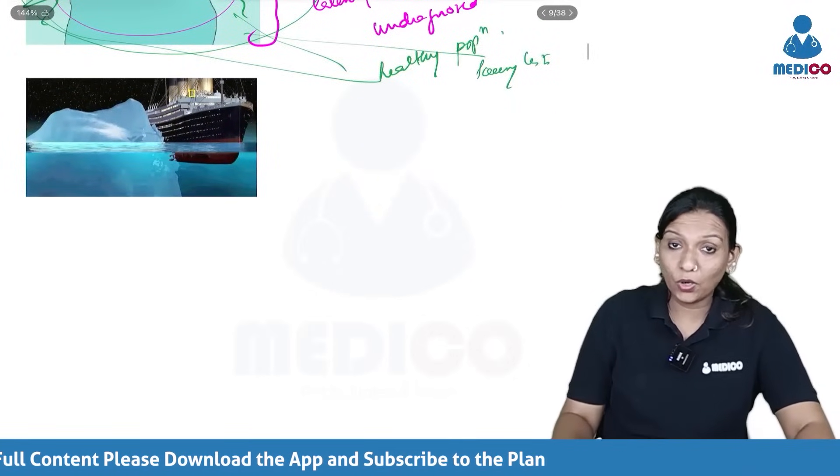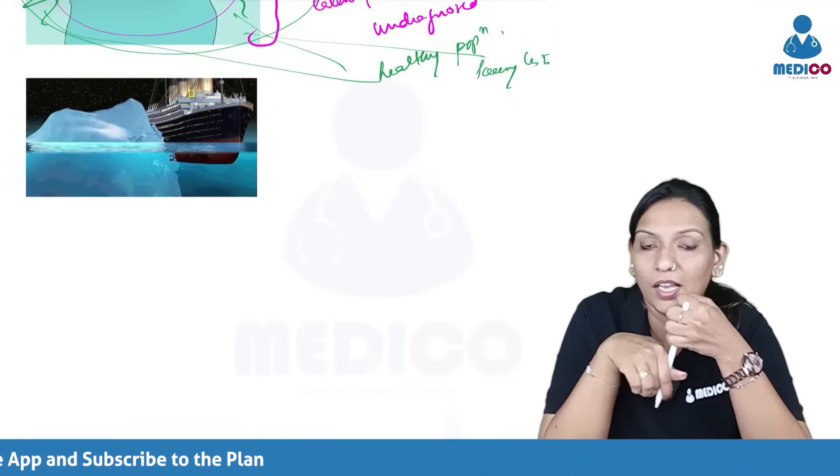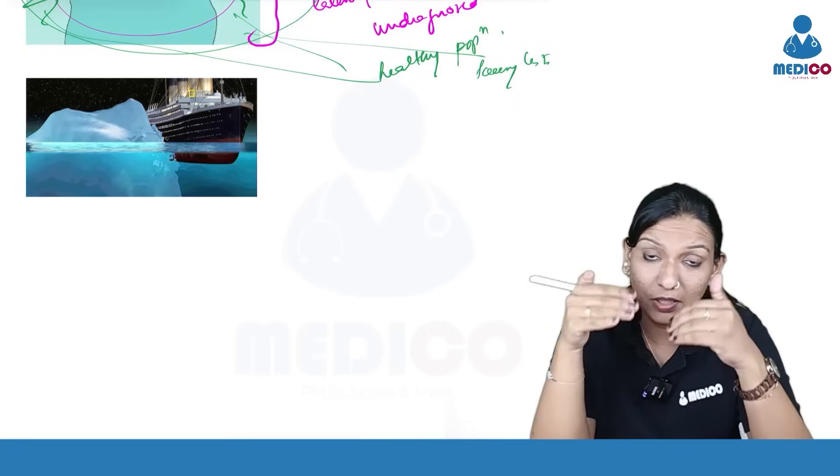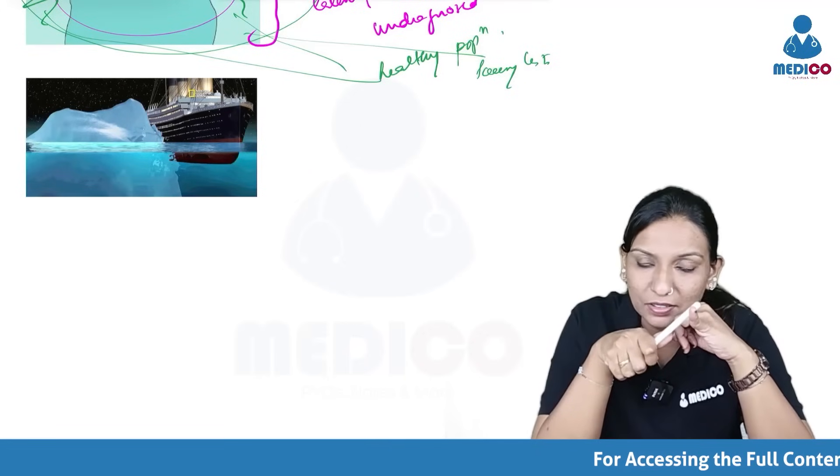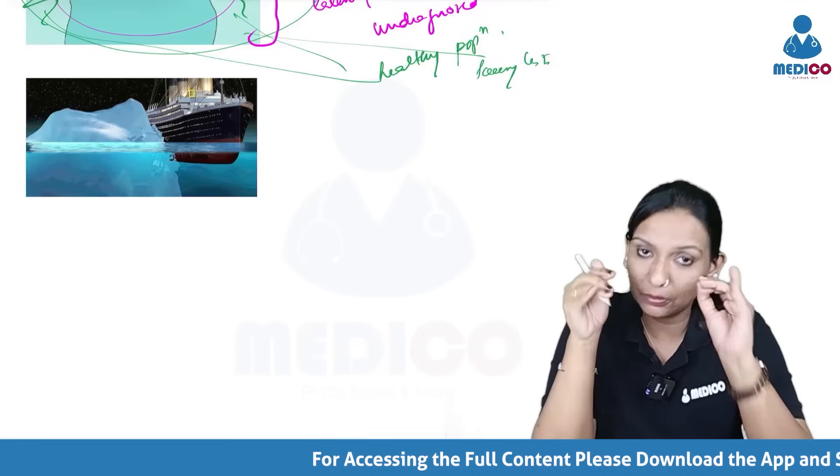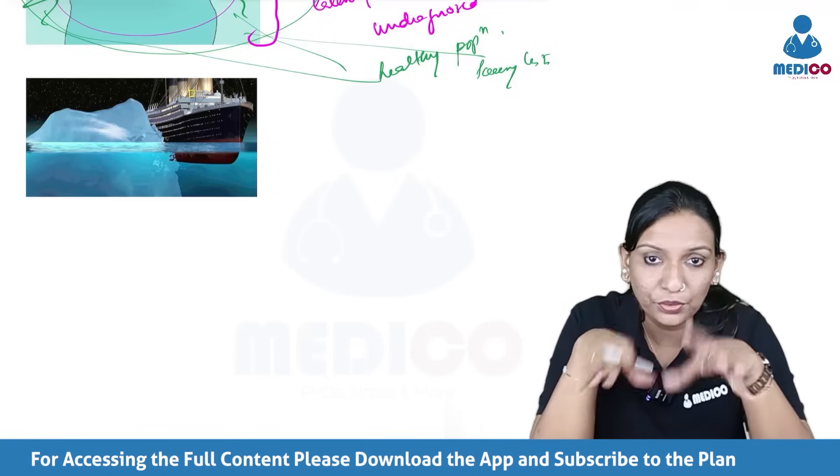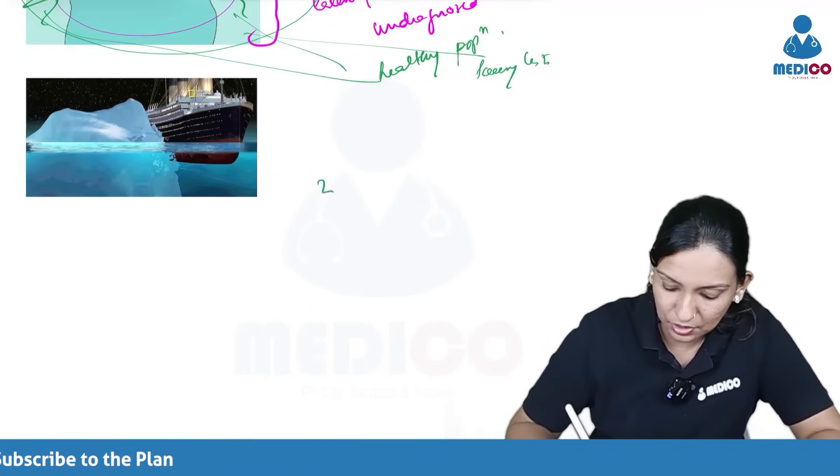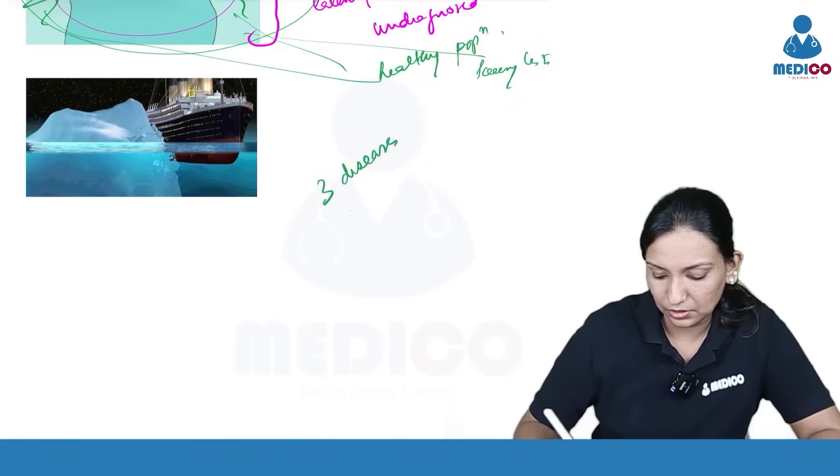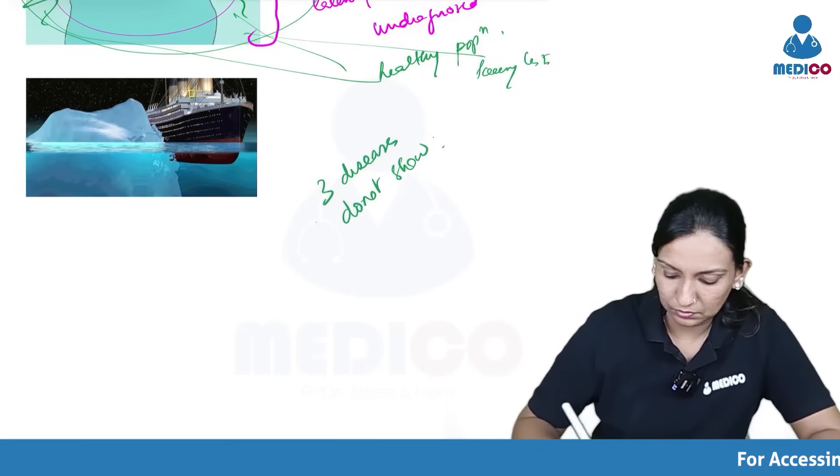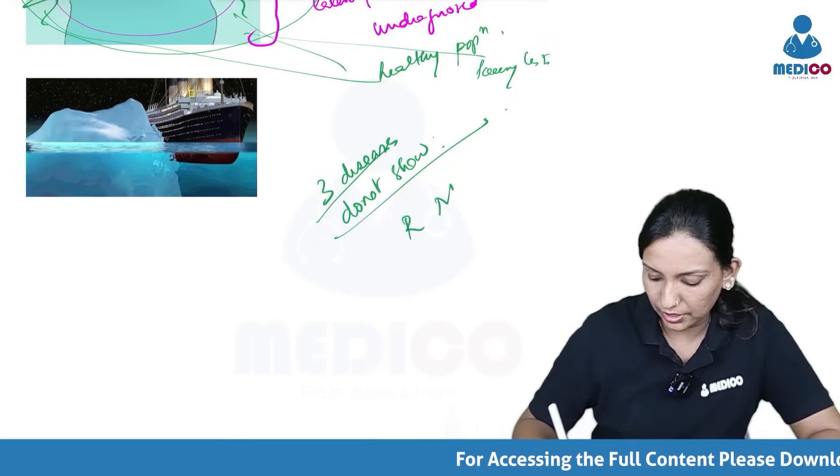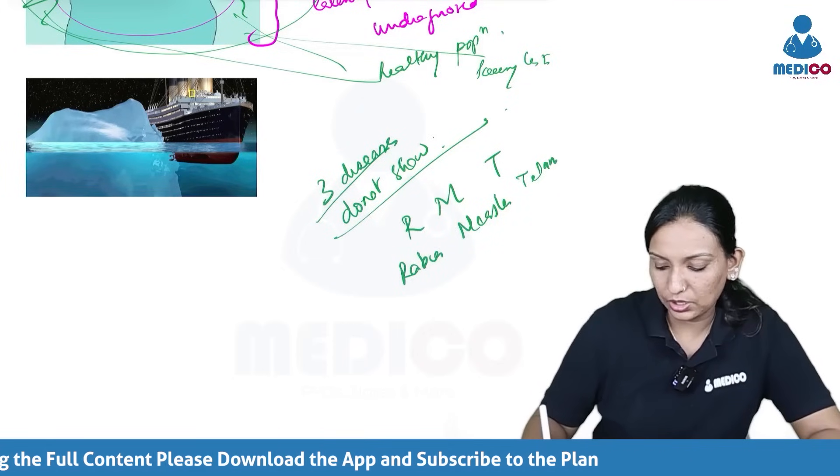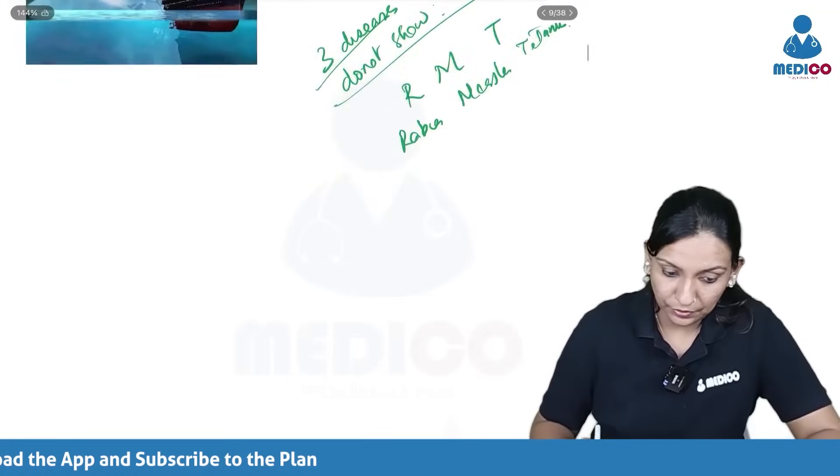And where do you apply screening test and where do you apply diagnostic test? At this visible place, you apply the diagnostic test. And for the asymptomatic or the invisible cases, you have to go for your screening test. Iceberg phenomenon is not shown by three diseases. Rabies, measles, tetanus. These three diseases do not show iceberg phenomenon. RMT: Rabies, measles, tetanus which do not show the iceberg phenomenon.